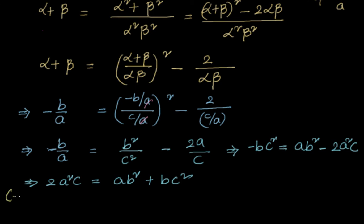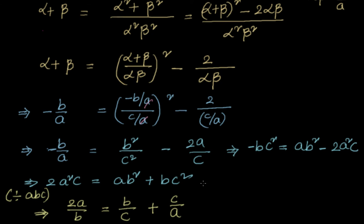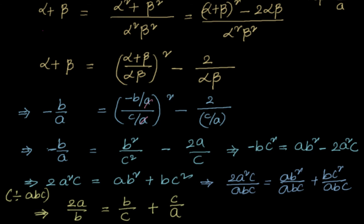Dividing the whole equation 2a²c = ab² + bc² by abc gives: 2a/b = b/c + c/a. This is exactly in the form 2B = A + C, which means b/c, a/b, and c/a are in arithmetic progression. So the answer is option D.